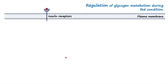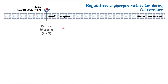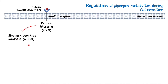Now let's talk about how glycogen metabolism is regulated during the fed condition. When glucose levels are high during the fed state, the beta cells of the pancreas release insulin. Insulin binds to its receptor on the plasma membrane in both hepatocytes and muscle cells, and this activates the enzyme protein kinase B (PKB).